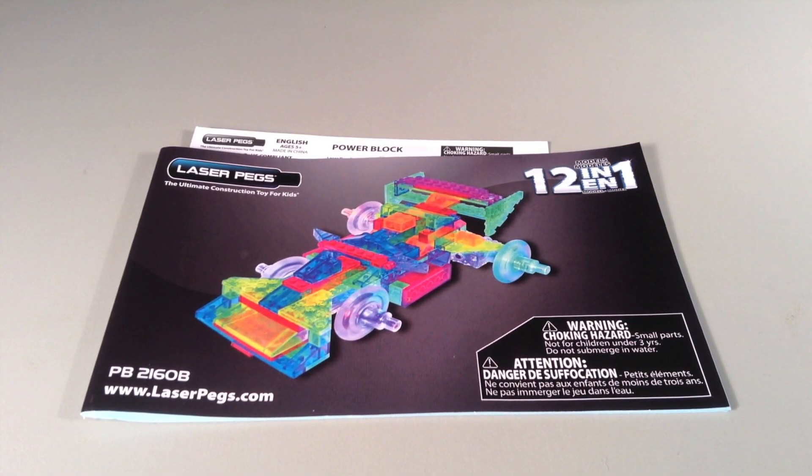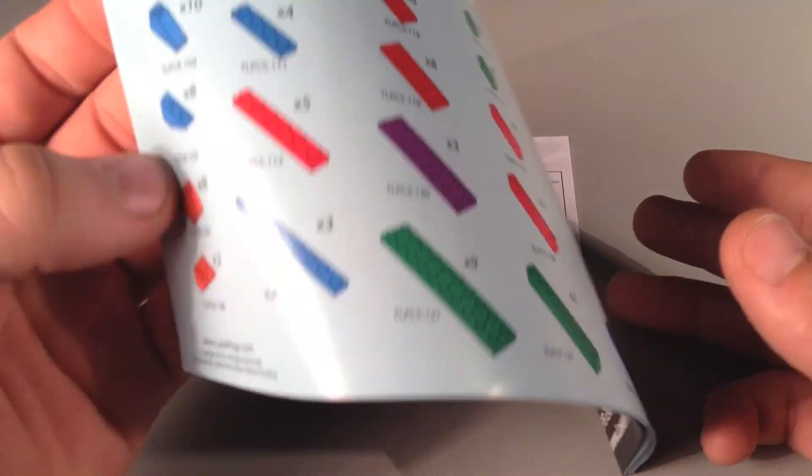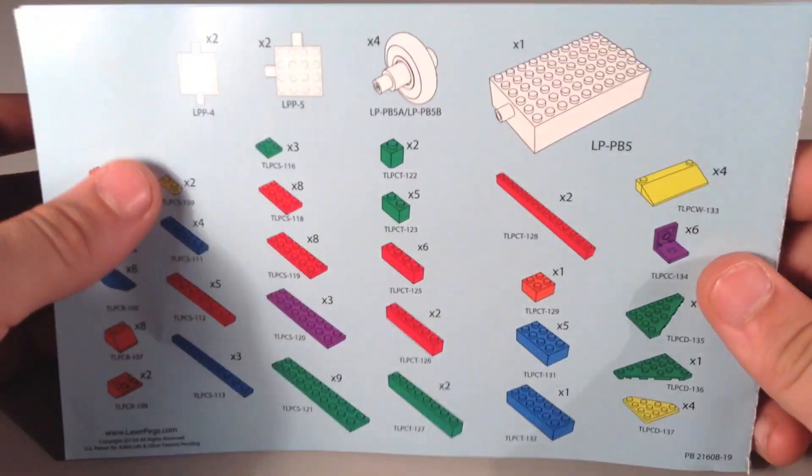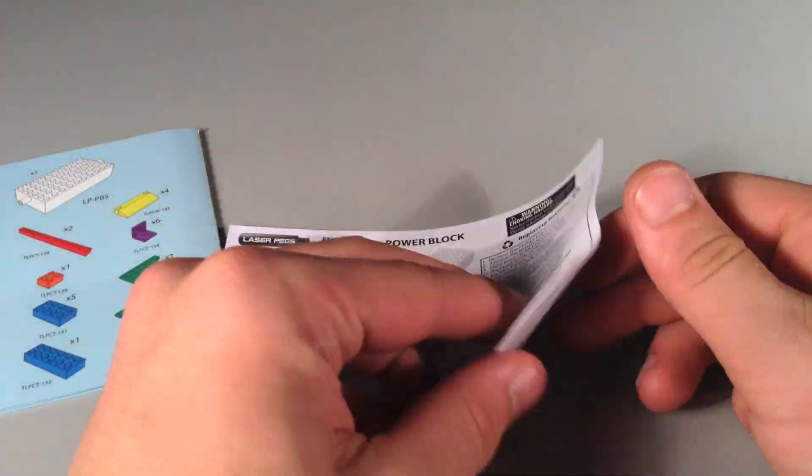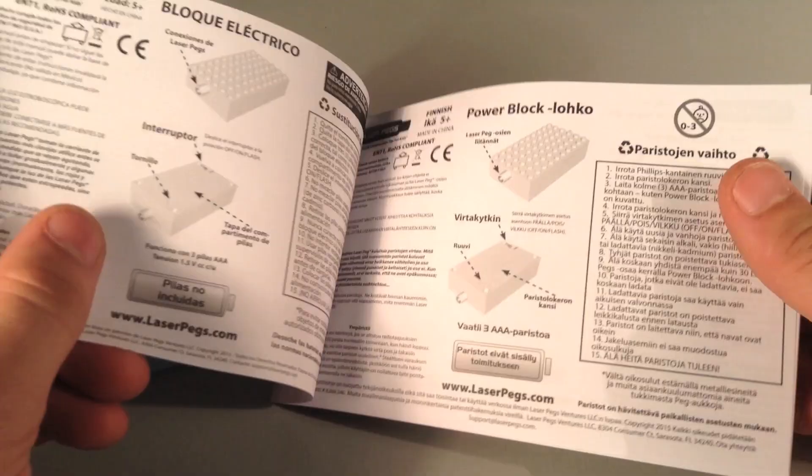In this set, you get one main manual, which is basically used to build the actual set. You can see the pieces are on the back right here, and there's not really any advertisements in here.